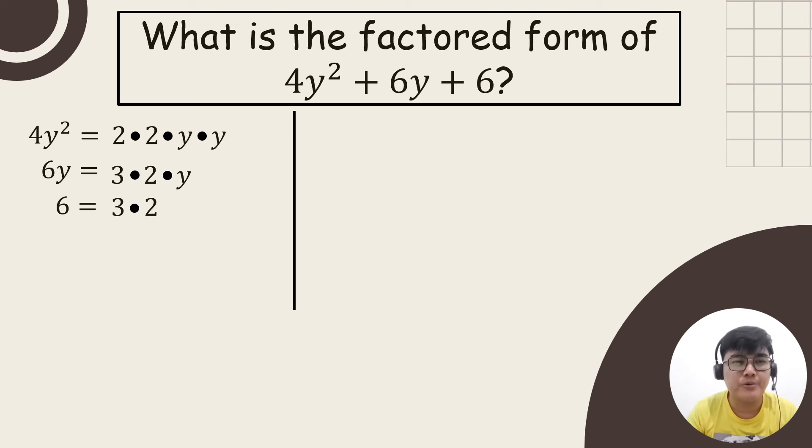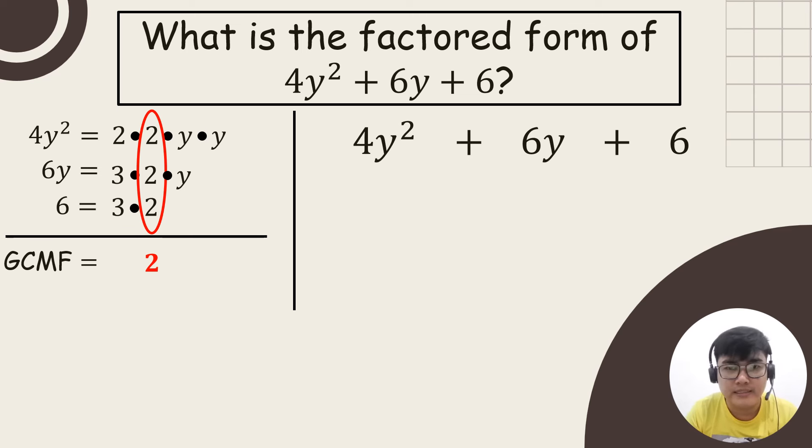After getting the prime factors of each term, we are going to circle the common factor to the 3 terms. We can see that the common factor among the three is 2. So therefore, our greatest common monomial factor of 4y squared plus 6y plus 6 is 2. This will be our first factor in our answer.